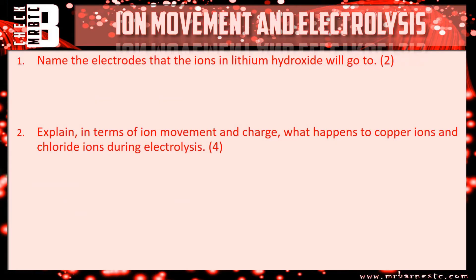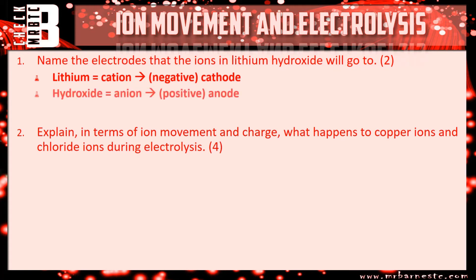Let's see how you've done. Question one: the ions in lithium hydroxide — lithium is a metal, therefore it's a cation, and it's going to go to the negative cathode. Hydroxide contains non-metals, therefore it's your anion and will go to the positive anode. One mark for each.